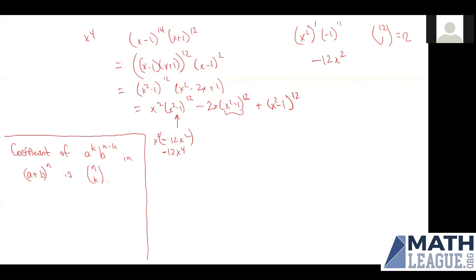For the second term, we want to find an x cubed in (x squared minus 1) to the 12th, because multiplying by x would give x to the fourth. But the only way to get x cubed is x squared to the three-halves power, which is not an integer. So there is no x cubed term in (x squared minus 1) to the 12th. Since there are zero x cubed terms, multiplying by negative 2x gives zero x to the fourth contribution from this second term.